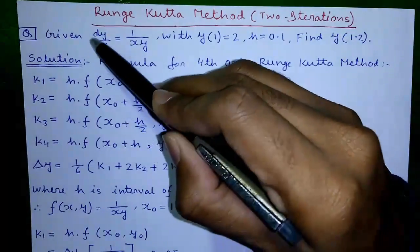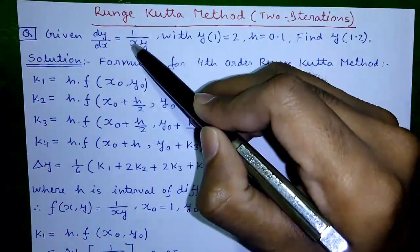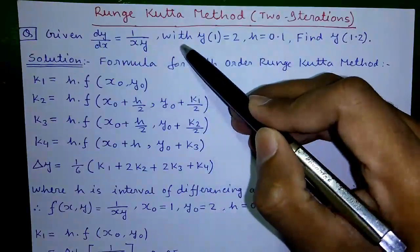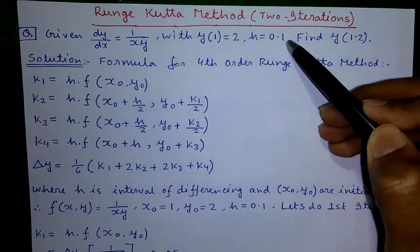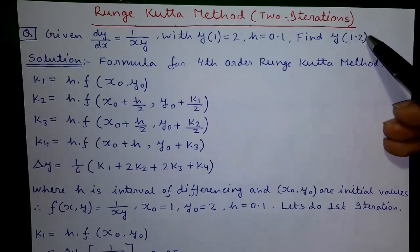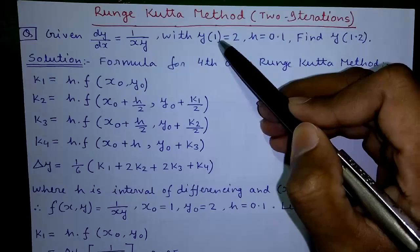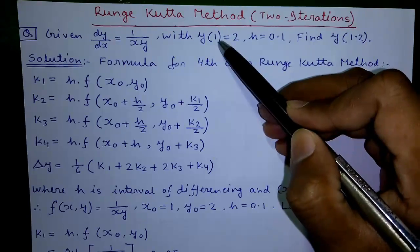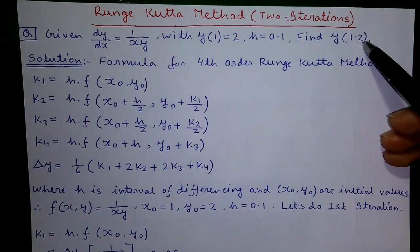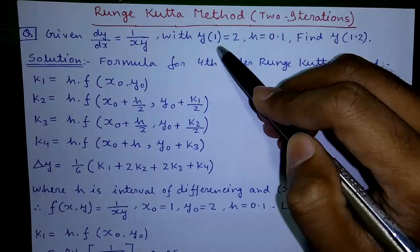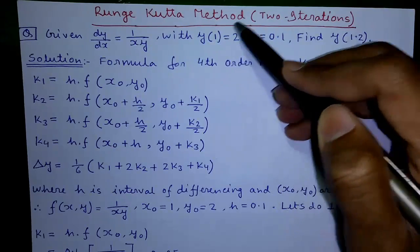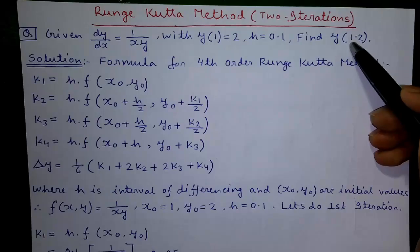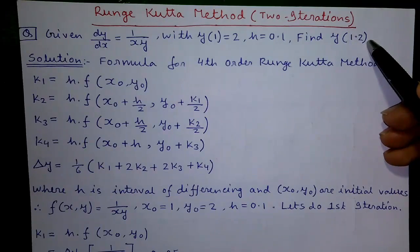Our given question is dy/dx equals 1/(xy), with y(1) equals 2, h equals 0.1, and we need to find y(1.2). It is a two-iteration question because y(1) is given and y(1.2) needs to be found. So first we will find y(1.1), then y(1.2) in two iterations.